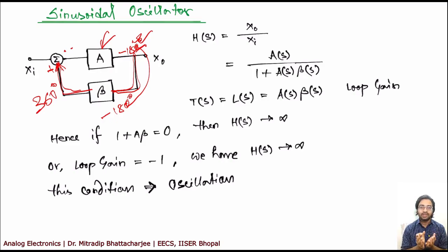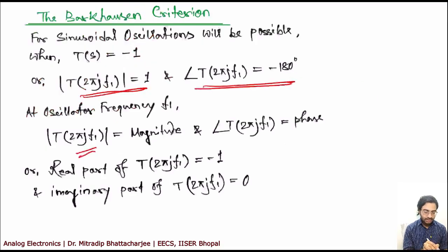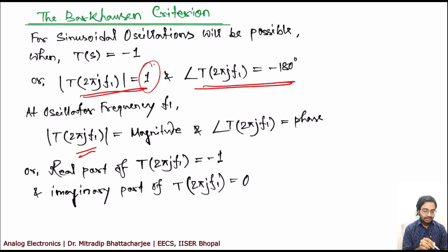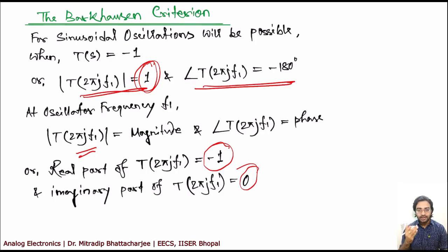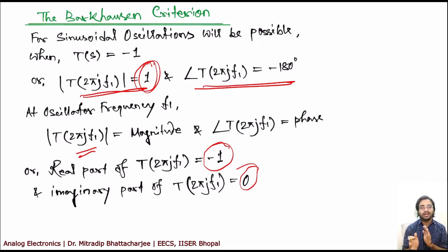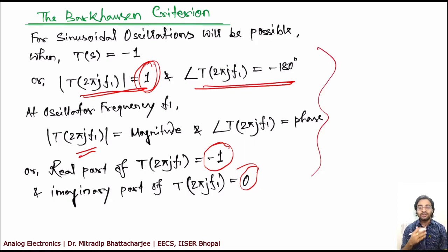The feedback signal is in phase with the input, and the magnitude of the loop gain should be 1. Equivalently, you can say the loop gain is minus 1 with a phase of zero degrees — since a magnitude of minus 1 already implies a 180 degree phase shift. Both cases are similar, and either leads to an oscillator.